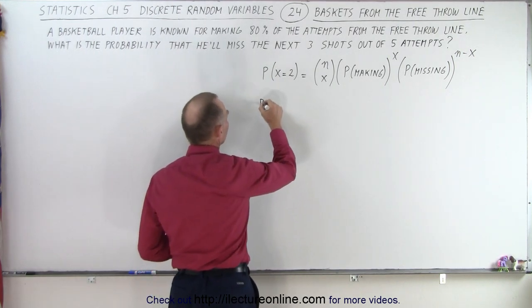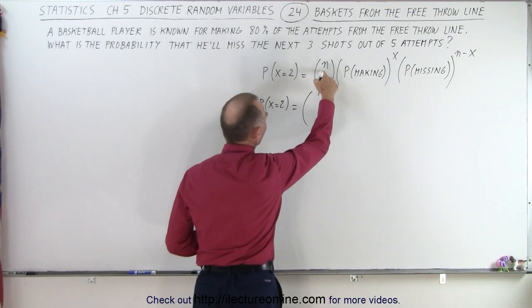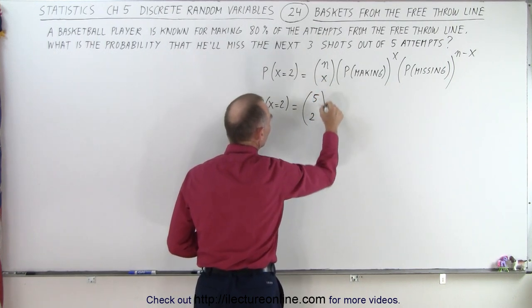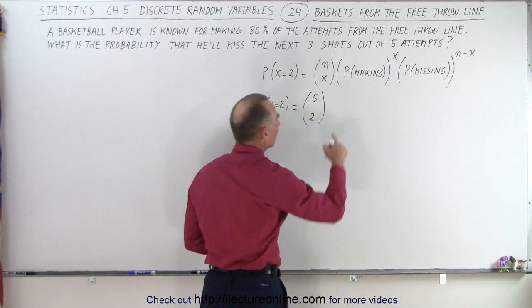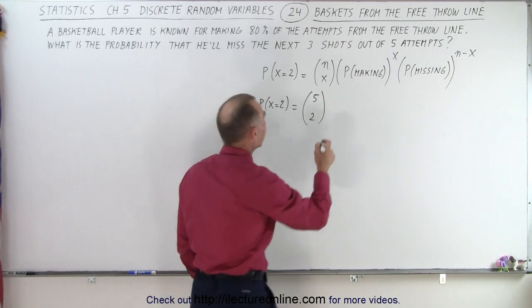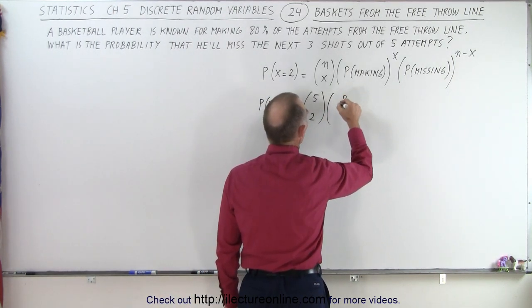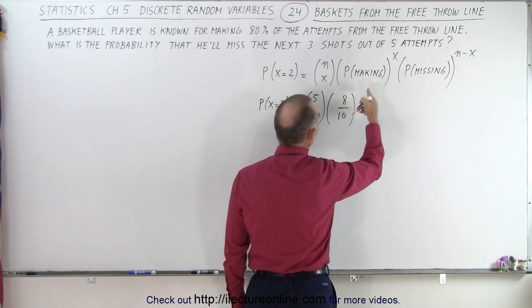So the probability that x equals two is equal to, here we have n being five, five attempts, and two will be in the basket. So he'll miss three out of five. The probability of making a basket is 80%, eight out of ten. So we can go eight over ten because he makes eight out of ten attempts typically. That's what he's known for.